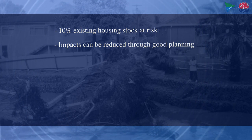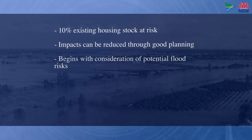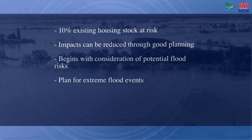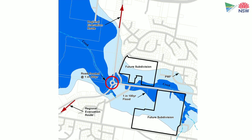Good land use planning begins by considering compatibility with potential flood risks, including public infrastructure and community facilities. And even though development can be sited between the 1% and probable maximum flood levels, planning for evacuation during extreme flood events should be considered at this stage. Subdivision planning may include flood-prone land, but must not reduce the area of flood flows or flood storage.